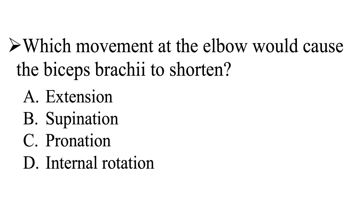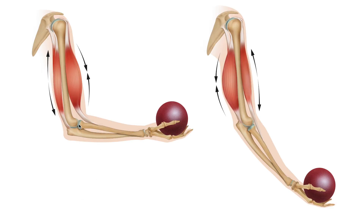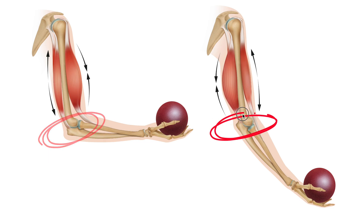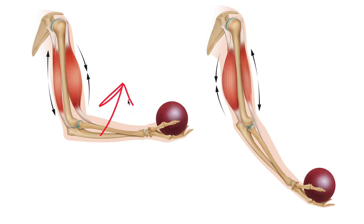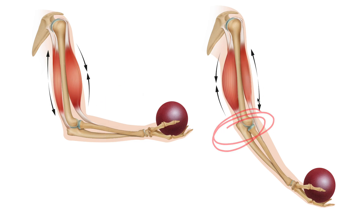Let's take a look at extension. Here we have flexion at the elbow, and then here we have extension at the elbow. This arm is being flexed, and then this arm is being extended. Notice that my biceps brachii are shortened in flexion at the elbow, and then during extension at the elbow, my biceps brachii are lengthened when the arm is extended.